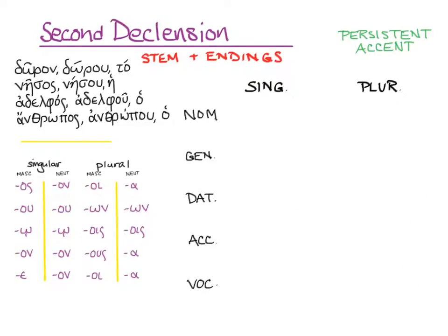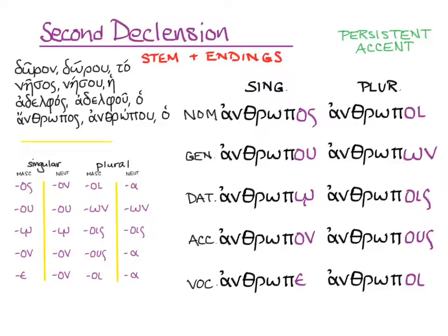Finally, let's do the same with anthrōpos. Here's the stem and the endings already done. The accents try to stay an acute on the alpha. But when the endings are long, the accent has to move to the second-to-last syllable in the genitive and dative singular and plural, and in the accusative plural, because with a long last syllable an acute cannot stay third-to-last. So: anthrōpos — man; anthrōpou — of man; anthrōpō — for man; anthrōpon — man; anthrōpe — man; anthrōpoi — men; anthrōpōn — of men; anthrōpois — for men; anthrōpous — men; and anthrōpoi — men.